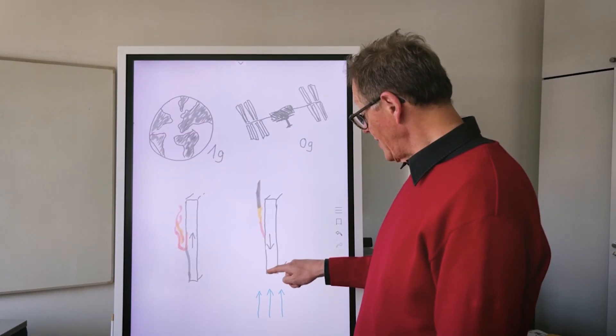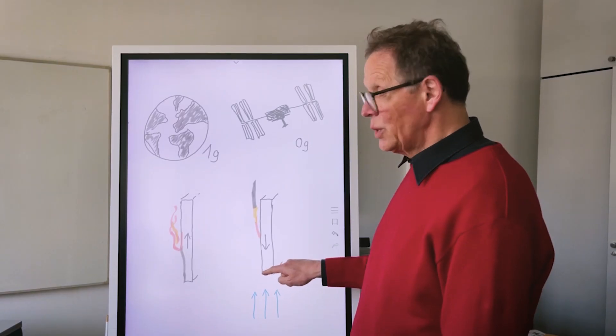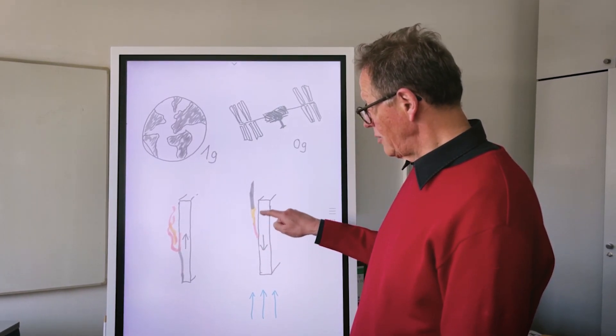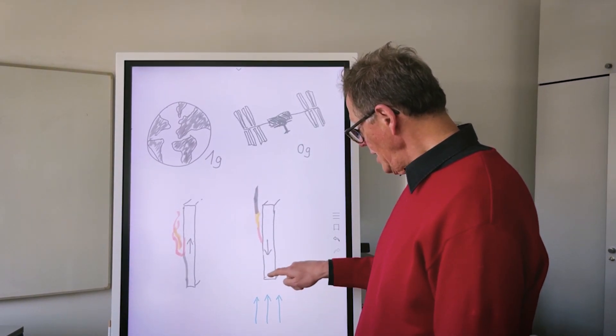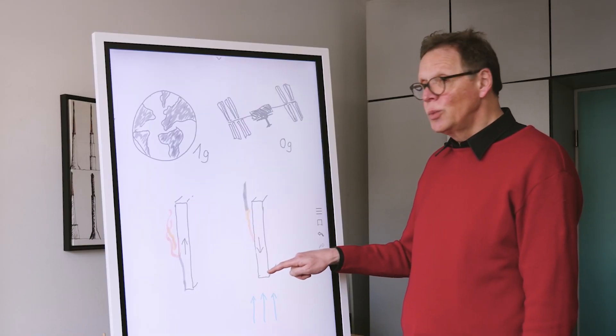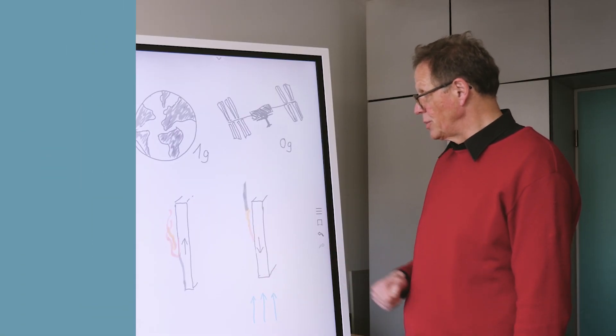When we ignite the sample at the lower end in microgravity, it will not at all propagate with the airflow as it does in 1G. It will sit at the leading edge and will consume the sample into the depths of the material.